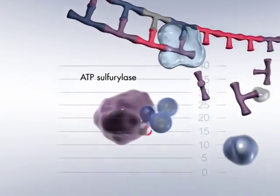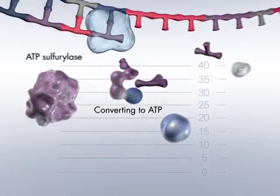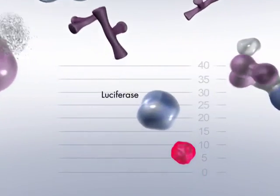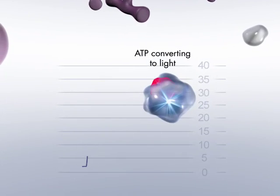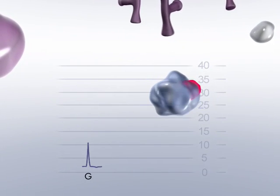ATP sulfurylase converts pyrophosphate to ATP. ATP powers oxidation of luciferin by luciferase, which generates a light signal recorded as a pyrogram peak.